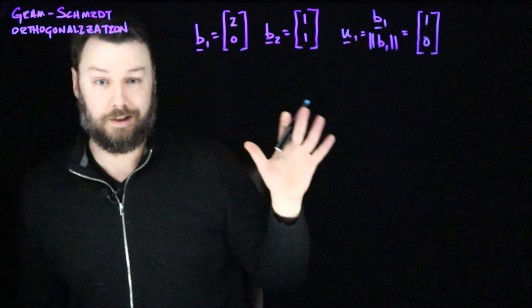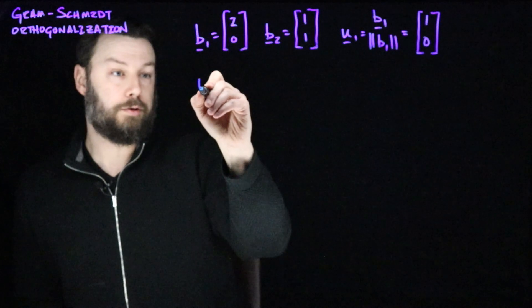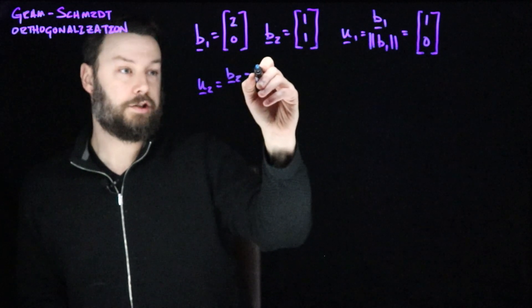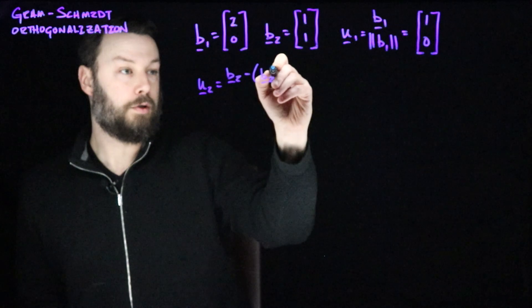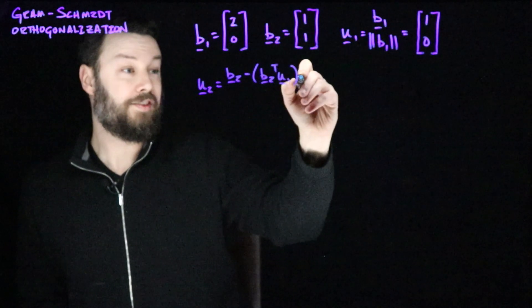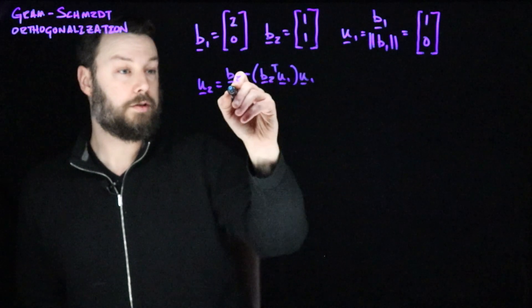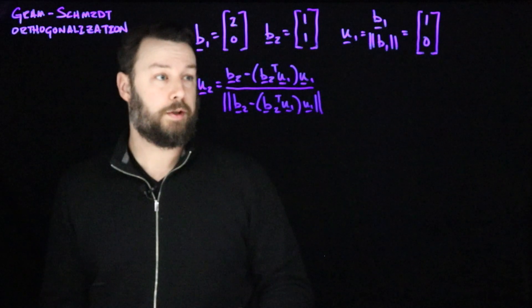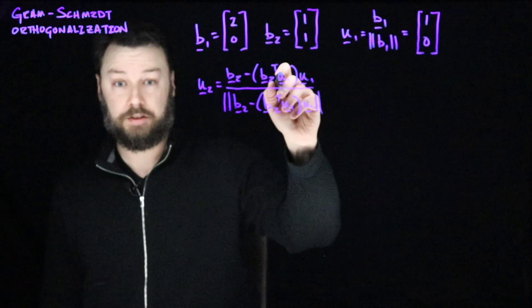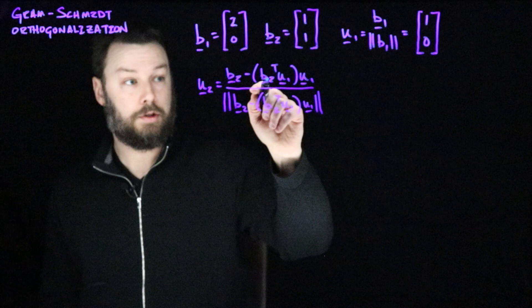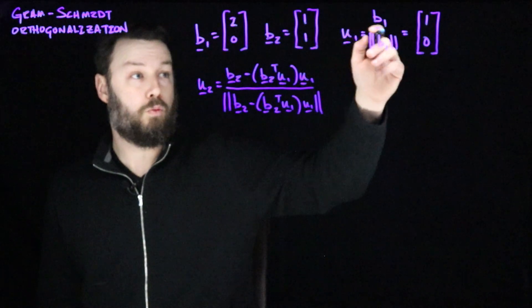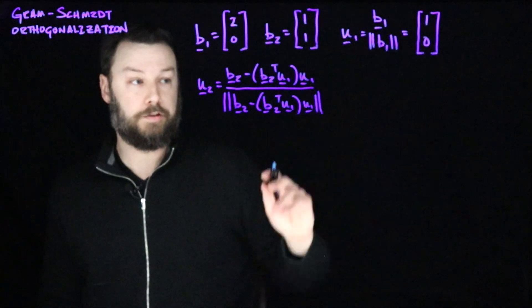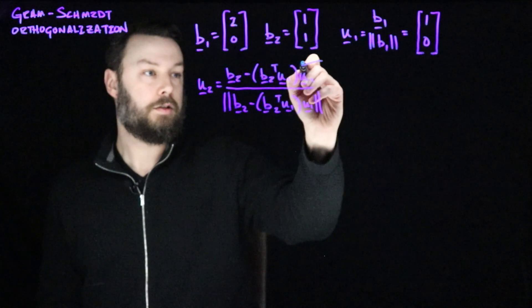All we did was normalize this, and it was already a pretty simple vector. Then we're going to get u2 by taking b2 and subtracting off the projection of b2 onto u1 and then scaling u1 by that amount and dividing by the norm. So let's think through what that means. We have this projection is the key operation here. So this is the inner product of b2 with u1. Well, it's going to be 1 because we multiply 1 times 1 is 1 plus 1 times 0, 0. It gives us 1. So this quantity here is just going to be 1.